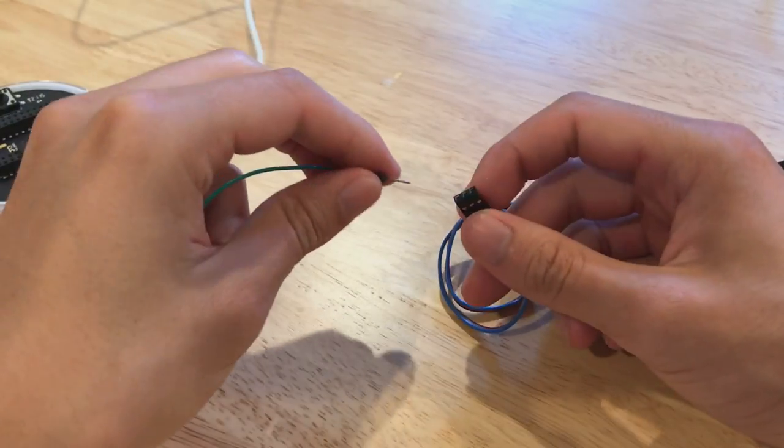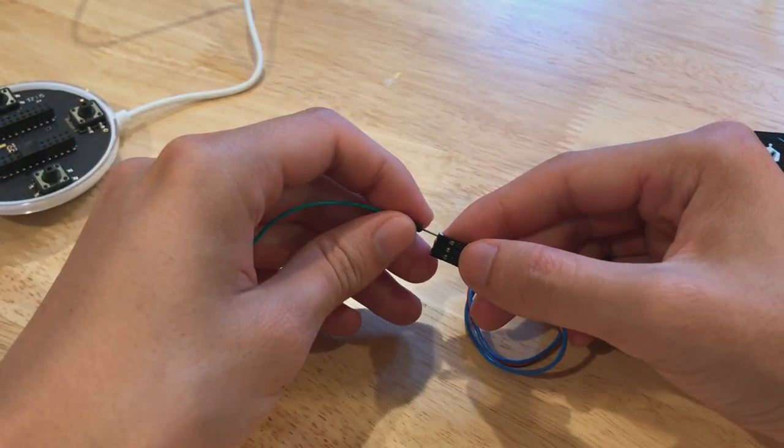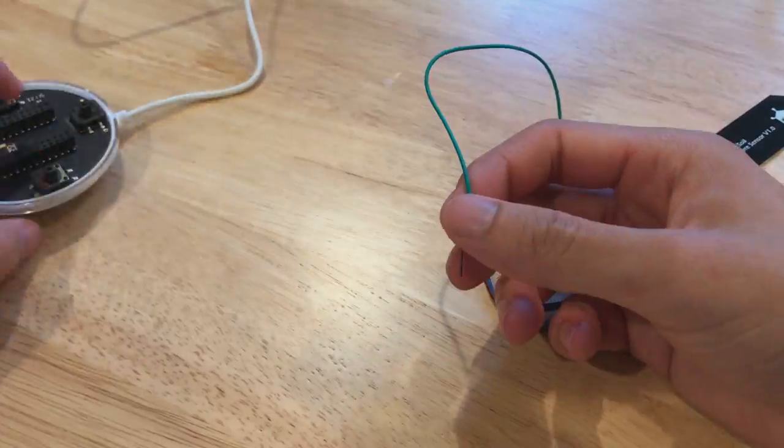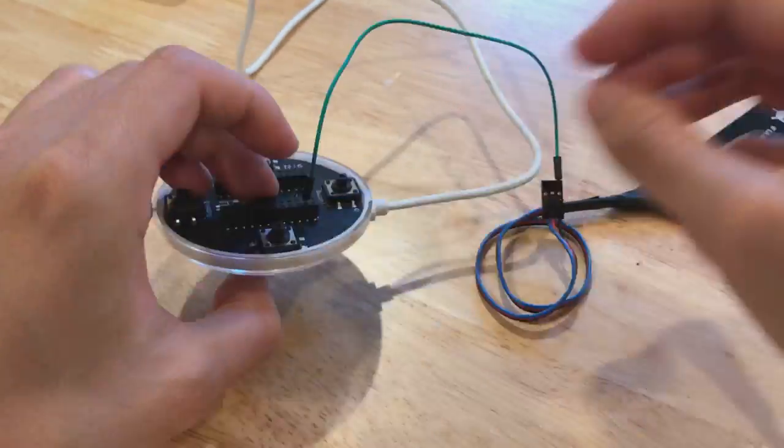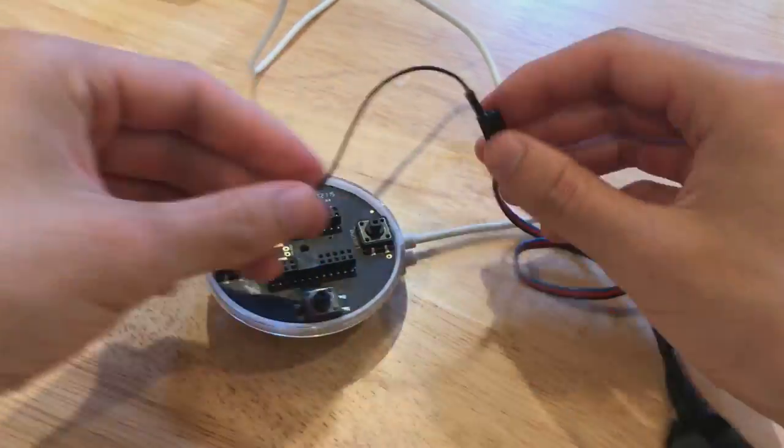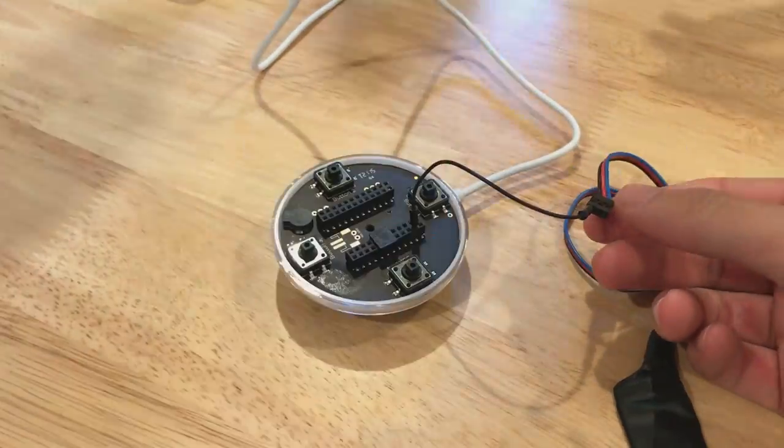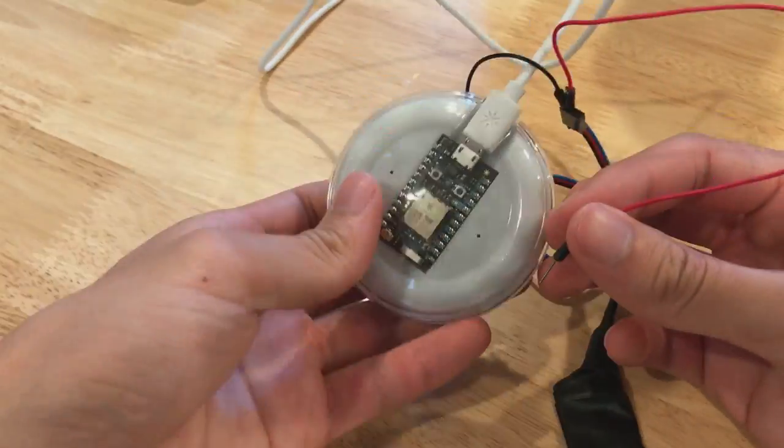Moving on to the next part of the project, here's the soil sensor. One wire is for ground, one wire for power, and one wire for the analog signal. It has those three wires because it's capacitive, not resistive, which also means you don't need to expose metal to the dirt.